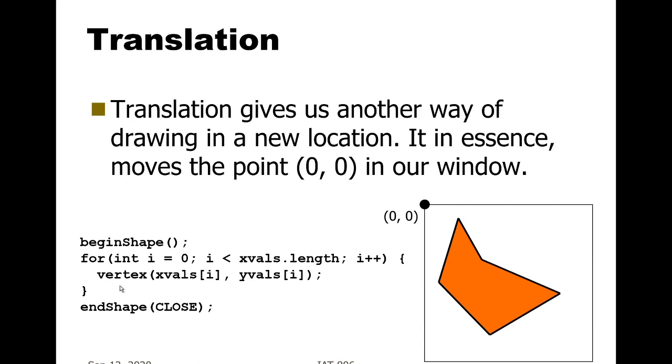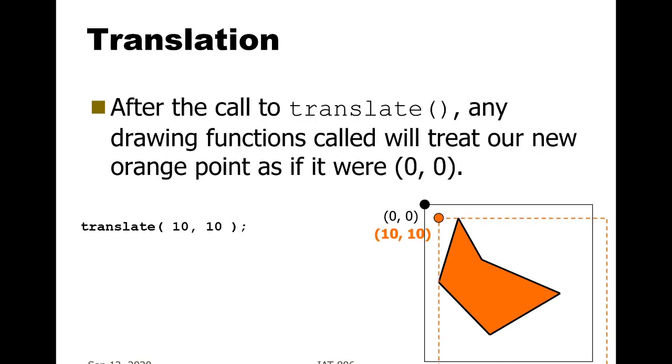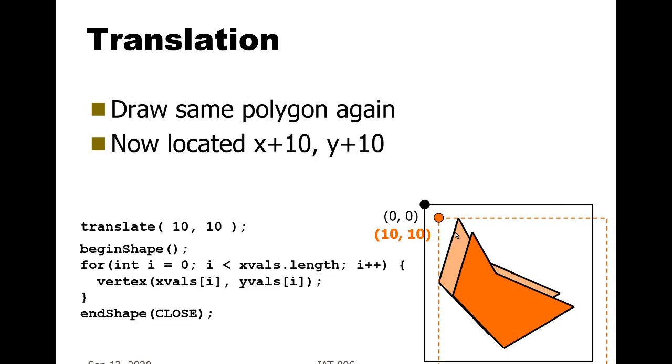Here is the standard begin shape, end shape, array access thing that we had before. Now we're going to issue before that a translate call. As before, we're going to change its location by 10 in X and 10 in Y, and issue the translate call before drawing the shape. So first when we do translate by 10, 10, that says move the origin over by 10 and down by 10. Then subsequent calls take place in this new location.